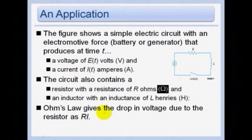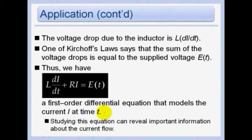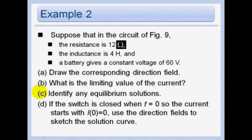Here is just a little application. This one looks intimidating because it has a whole lot of words, but all we really need to pay attention to is the equation that they give us. The figure shows a simple electric circuit with an electromotive force battery or generator that produces at time t a voltage E of t volts and a current I of t amperes. The circuit also contains a resistor with a resistance of R ohms and an inductor with an inductance of L. Ohm's law gives us the drop in voltage due to the resistor as Ri. The voltage drop due to the inductor is L DI DT. And then we have this equation. Okay, and this is really all we need. A first order differential equation that models the current I at time t.